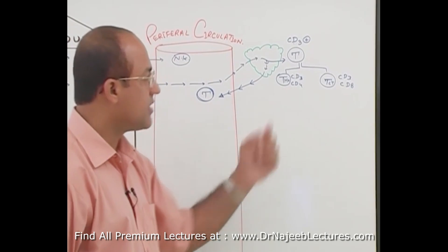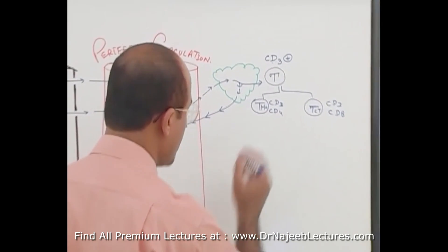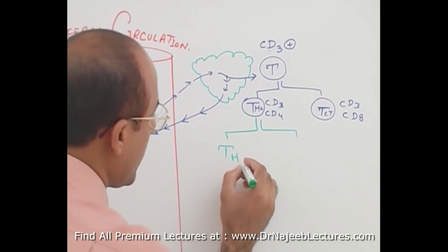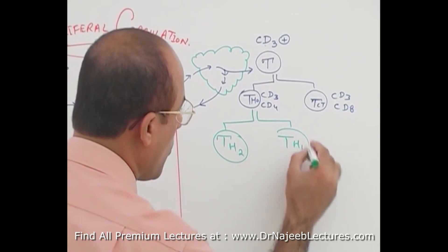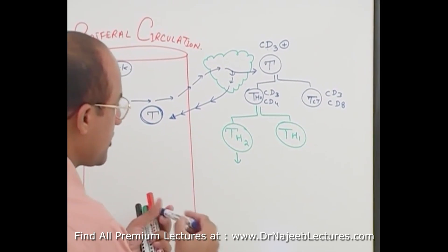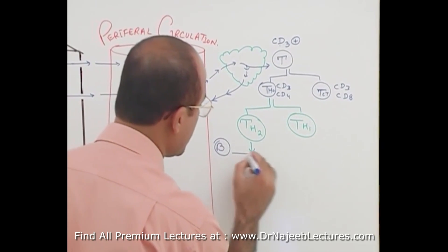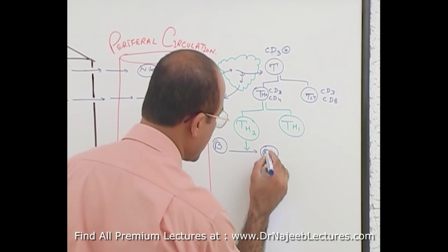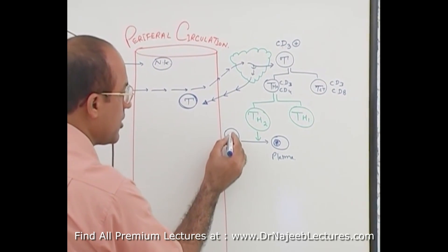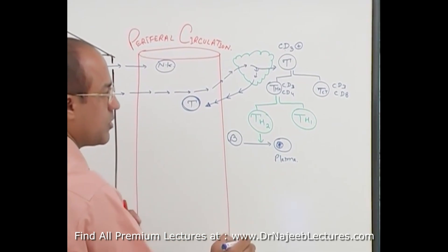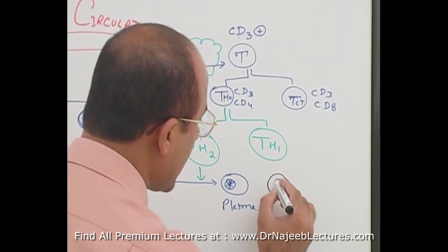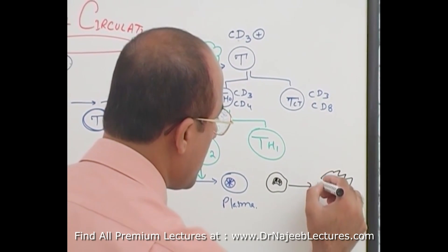CD4-positive cells can divide into two types: T helper 2 and T helper 1. The major function of T helper 2 is to stimulate B cells and convert them into plasma cells. B cells are acted upon by cytokines produced by T helper 2. T helper 1, on the other hand, can convert monocytes or macrophages into highly active macrophages.